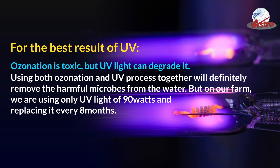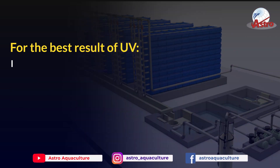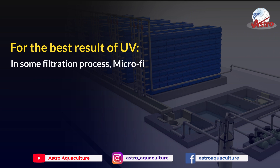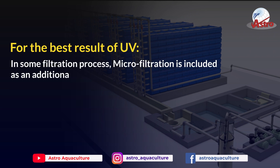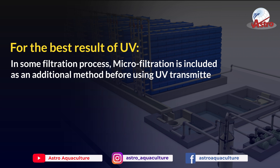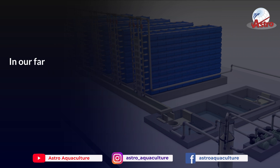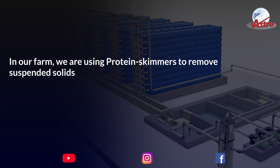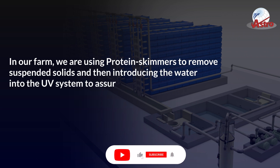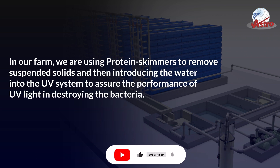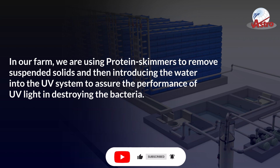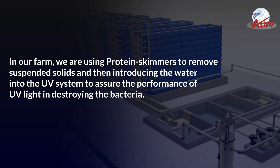On our farm, we are using only UV light of 90 watts and replacing it every 8 months. In some filtration processes, microfiltration is included as an additional method before using UV transmittance. On our farm, we use protein skimmers to remove suspended solids and then introduce the water into the UV system to assure the performance of UV light in destroying the bacteria.